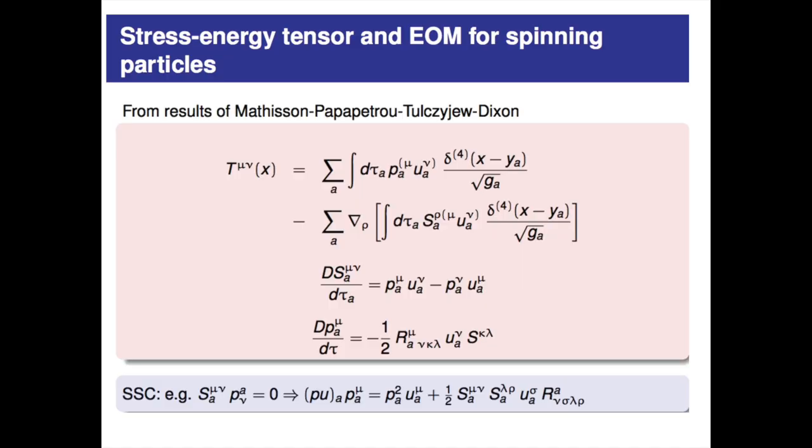As I said, you want at the end a Hamiltonian formalism — some symplectic structure — but first you want equations of motion, and you can start without specifying the phase space and canonical form. You want to describe the stress-energy tensor along two world lines. The definition by Mathisson of a spinning particle model is something with a delta-function distribution for the mass and momentum, plus a derivative of a delta function — the first term after — which is the spin. From this you get the Mathisson-Papapetrou-Tulczyjew-Dixon equations of motion, giving the variation of the spin and momentum.